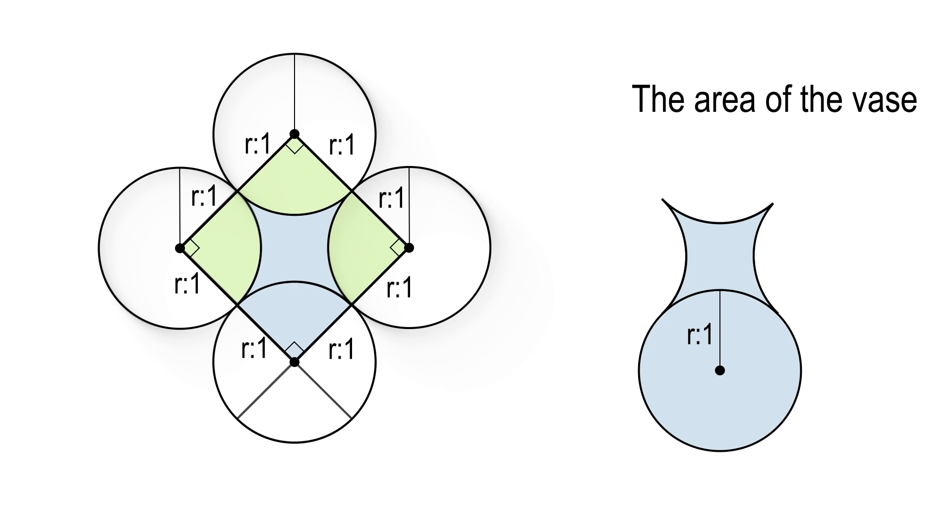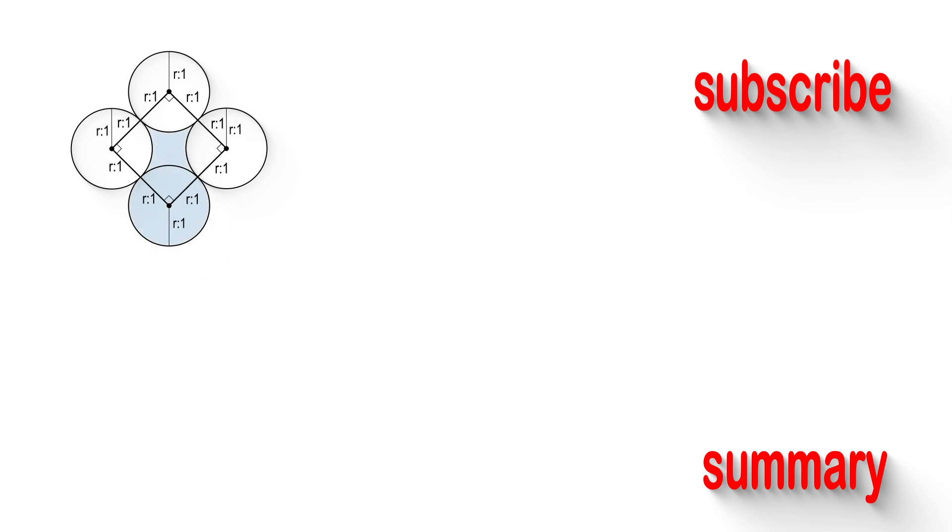From this, the area of the vase will be equal to the area of the square. Then, when we calculate the area of this square, four will be the solution.